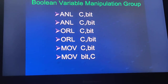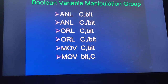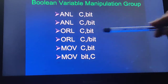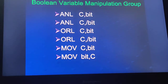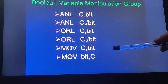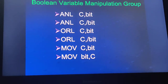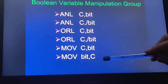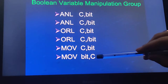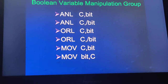Here are the logical operations with the single bit. ANL is for the AND operation, and ORL is for the OR operation. MOV is used for moving a single bit into the carry, or from carry to a bit position.